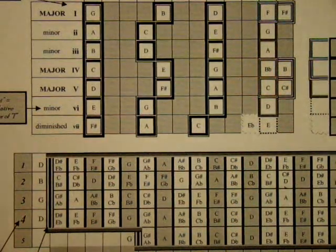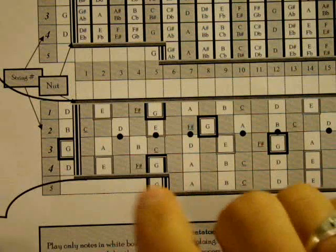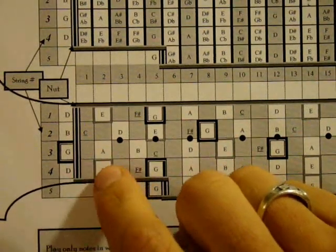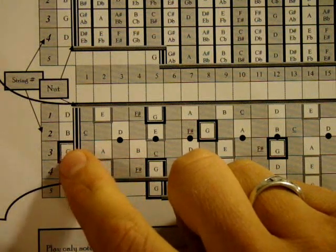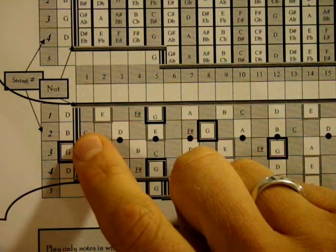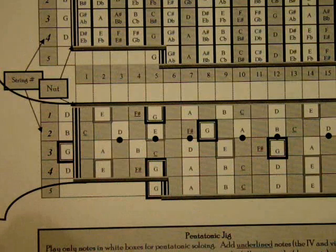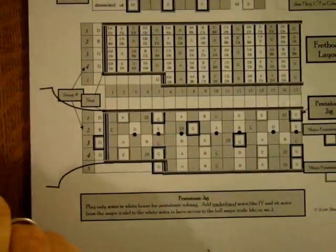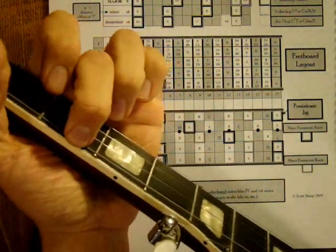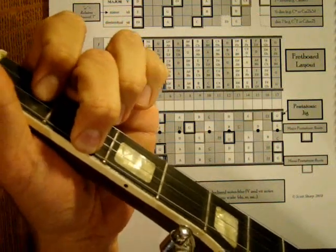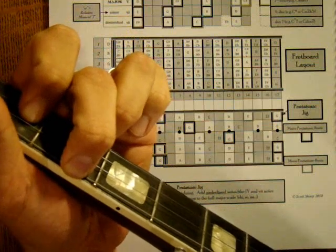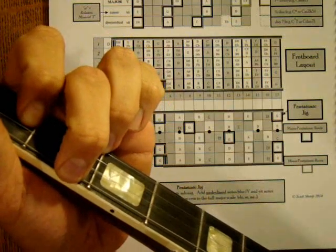For a C major chord we're going to look for the notes C, E, and G. Looking at your toolbox, to find C, E, G, we can play an E on the fourth string second fret, and then an E on the second fret of the first string. So here's a C major chord — we have the notes E, G, C, and back to E, G, C, G.